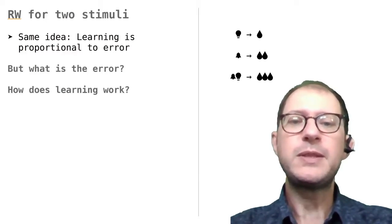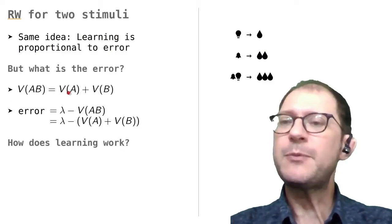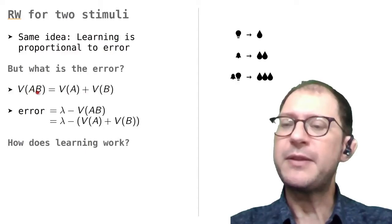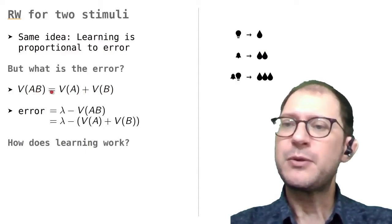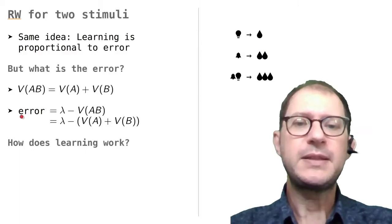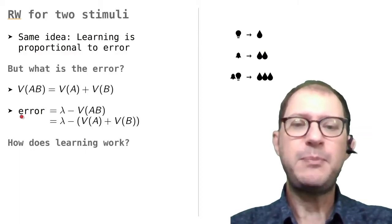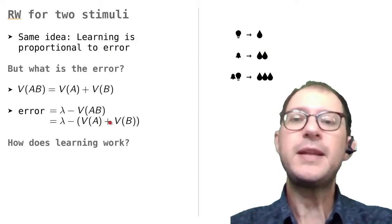The reason why we use this assumption is that it makes it very easy to write the error for two stimuli. So our assumption is that when you have A and B together, here written AB, their associative strength sum. So the associative strength of A and B together is the associative strength of A plus that of B. This means in turn that the error lambda minus V(AB) will be lambda minus V(A) plus V(B). That's it.